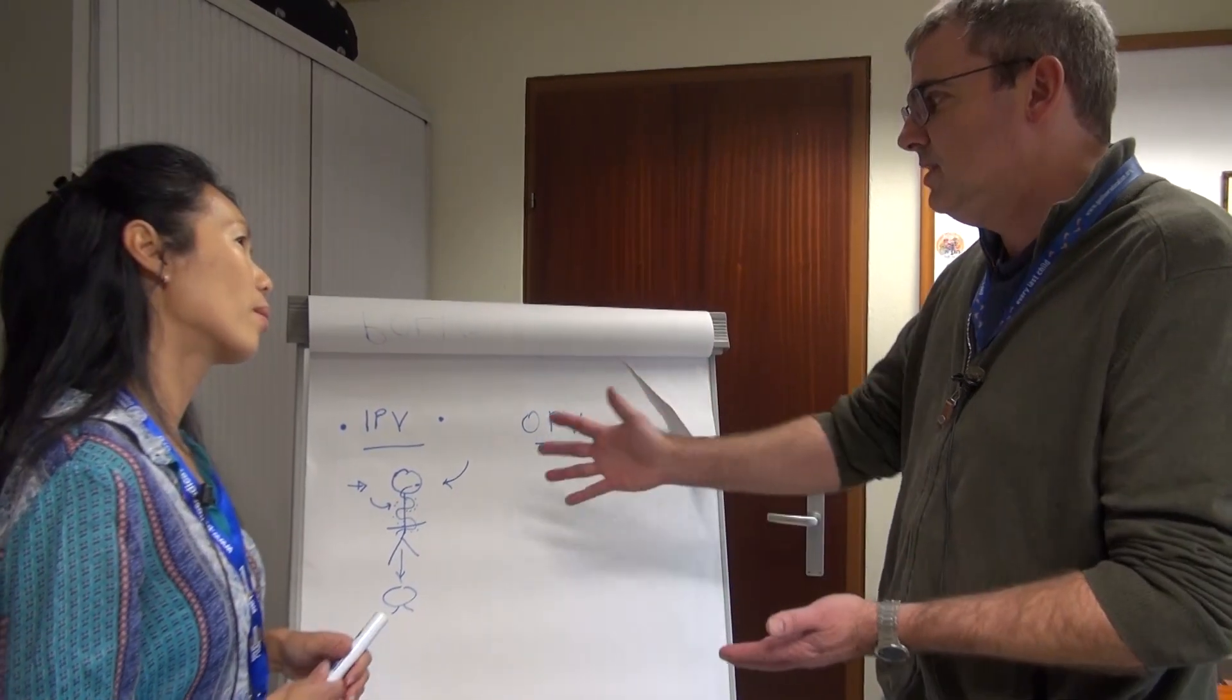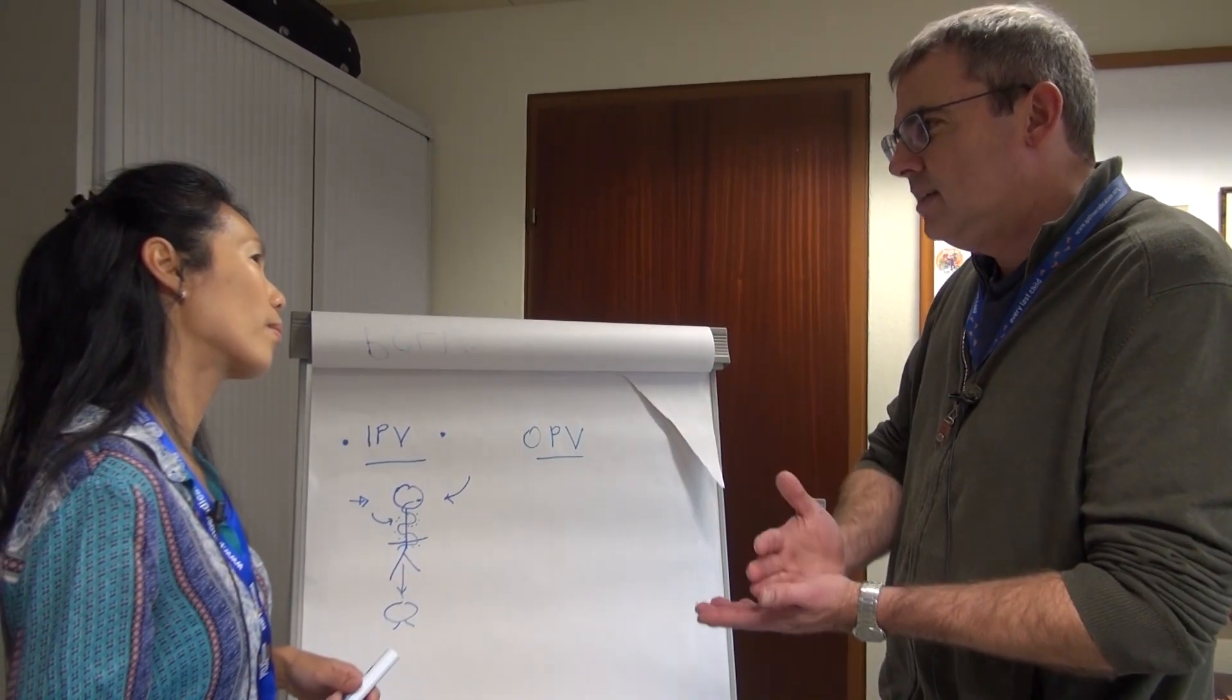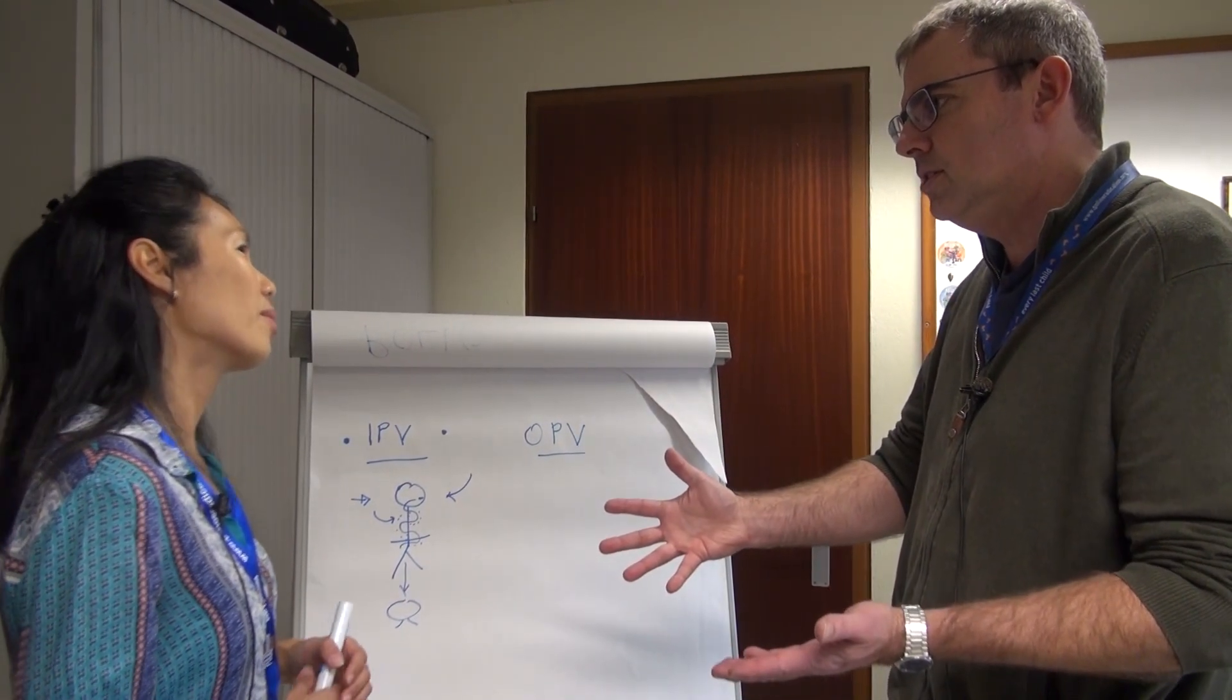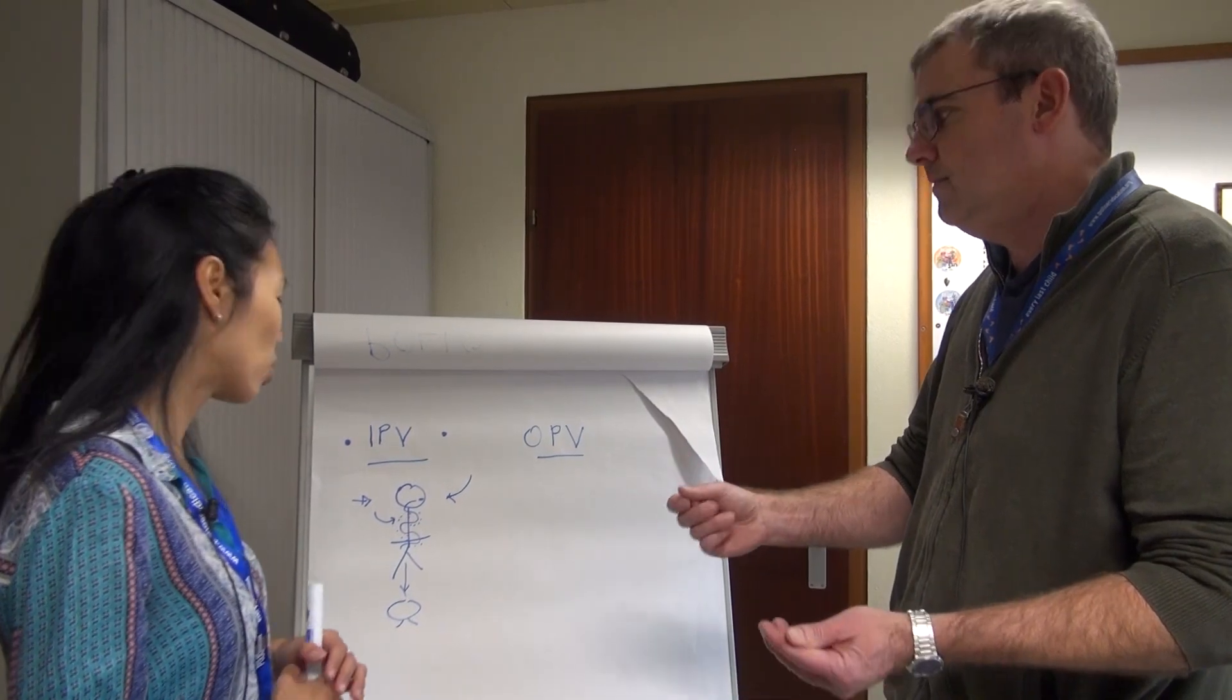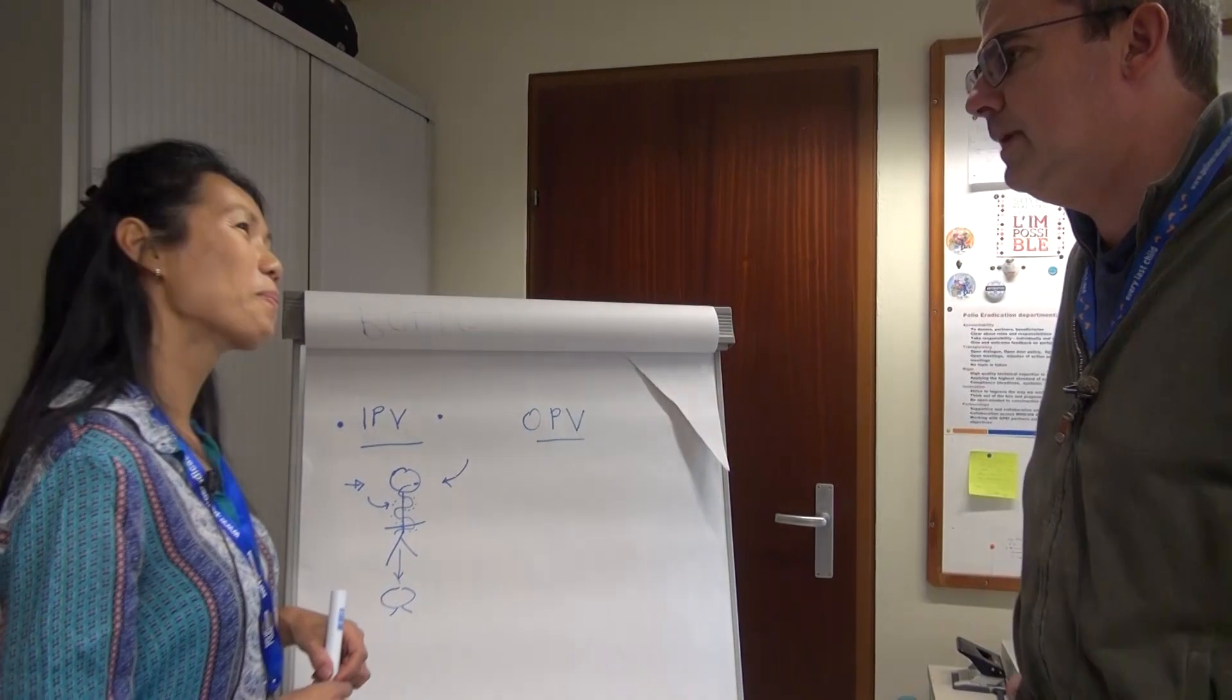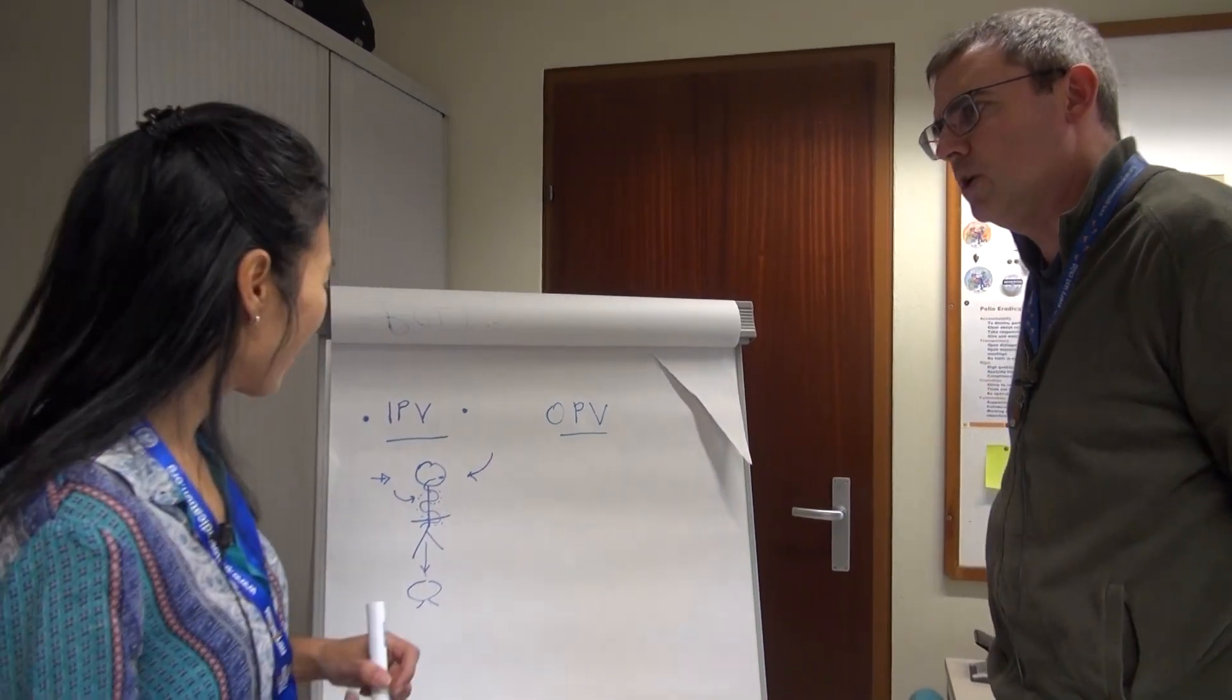And so actually with this vaccine we cannot interrupt the transmission chain of the virus, which is of course what we're after in an eradication. Yes. Is that correct? That's right. Okay I think I understand. And what about OPV then? How does it work?